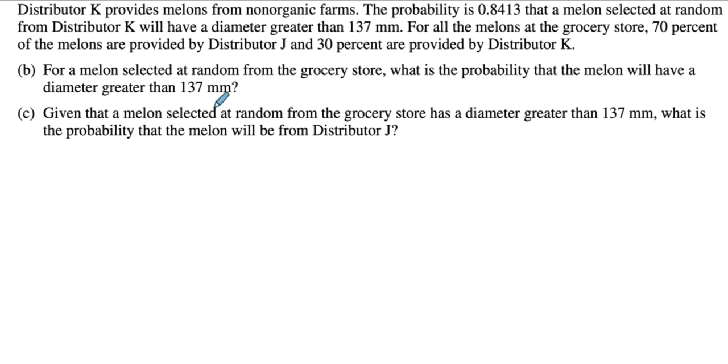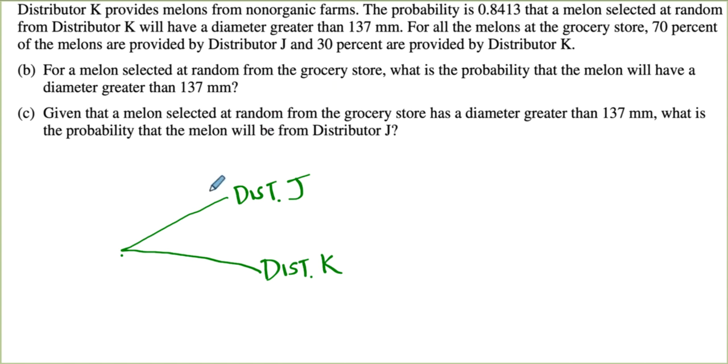So now looking at parts B and C, you can go ahead and read it if you haven't already. They are combining two different factors here. We are combining whether the melon comes from distributor K or J. That's one probability that we have to deal with. And then for each one of those, there is a different probability that the melon is greater than 137 millimeters. For this, I always love to draw my tree diagram. So I'm going to start our tree diagram. You're either coming from distributor J or you're coming from distributor K. And we have to make sure that we put the probability of each happening. They said that 70% of the melons are provided by distributor J. So we can infer that 30% come from distributor K.